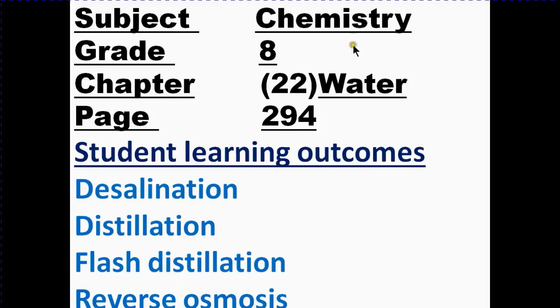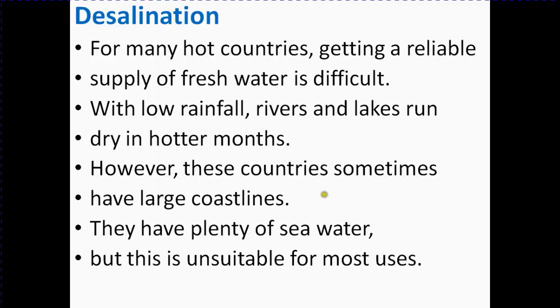Bismillahirrahmanirrahim, assalamualaikum. Subject: Chemistry, Grade 8, Chapter number 22, Water, page number 294. Student learning outcomes: the topics that we deal today - first is desalination, then distillation. You know very well distillation is from here. Osmosis we already know about, but here we deal with reverse osmosis. So let's start today's lesson.